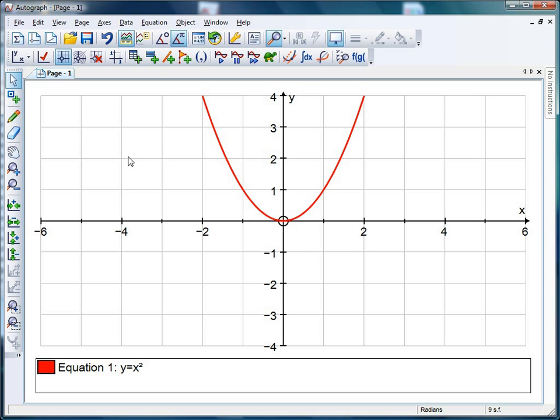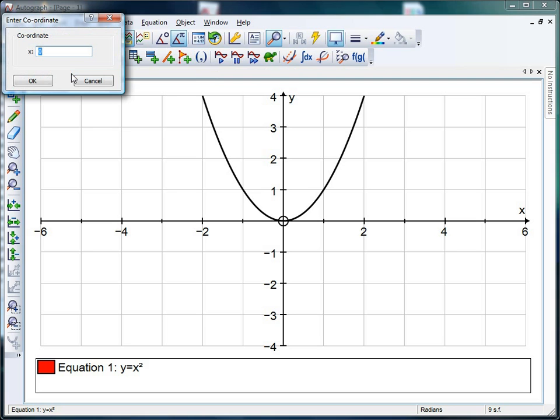First thing we need to do is put in those points. You have a couple of options for putting in points in Autograph, but the best one for this is probably to select the curve itself so it goes black, then hit the coordinate tool.